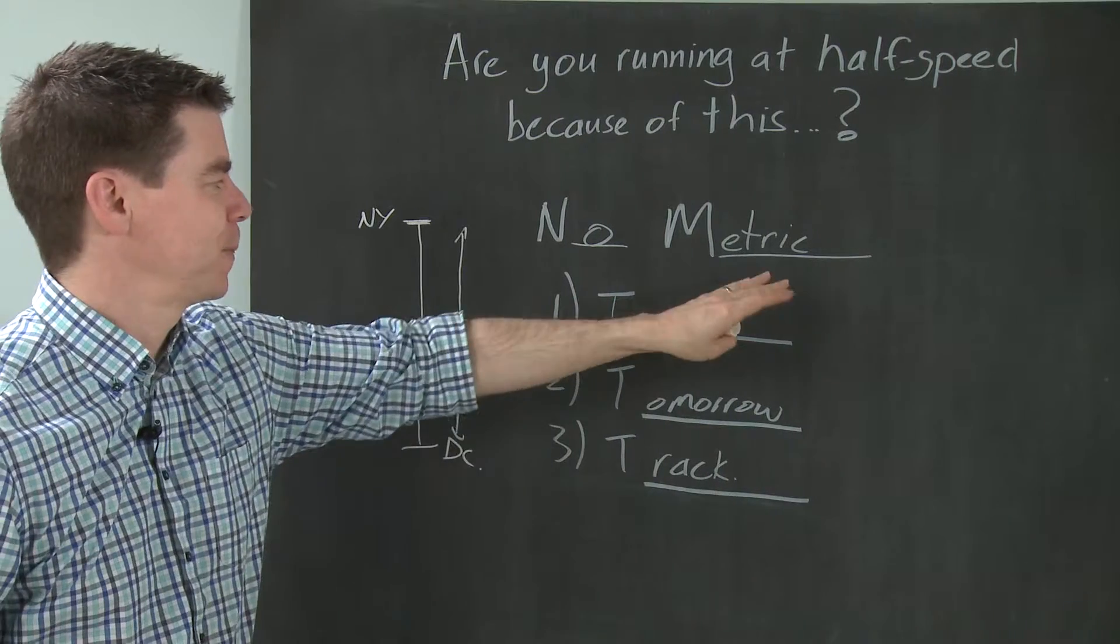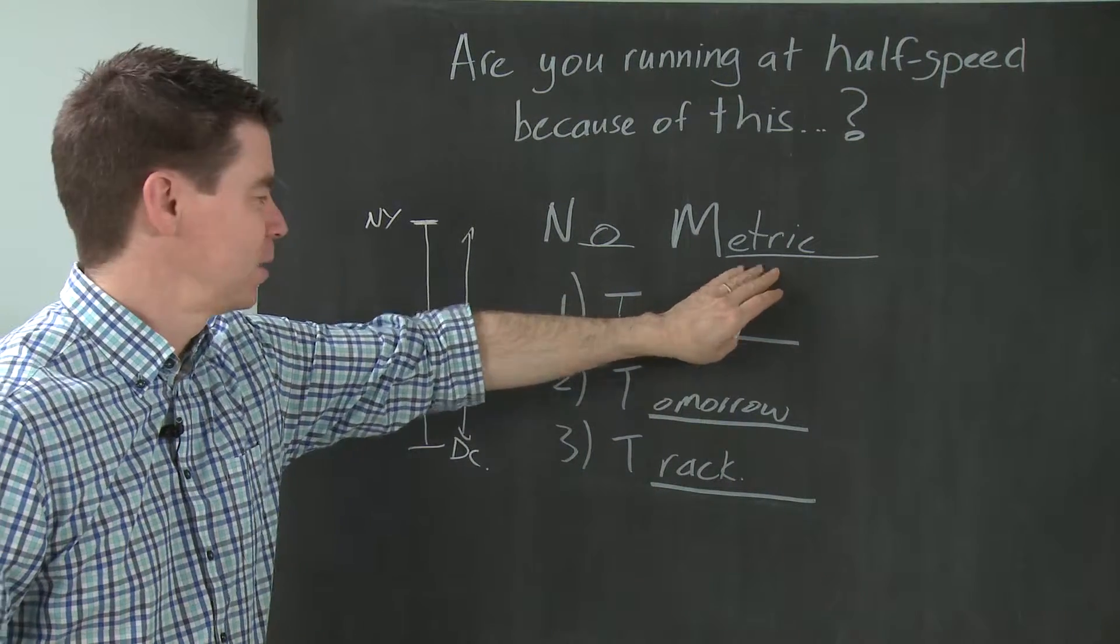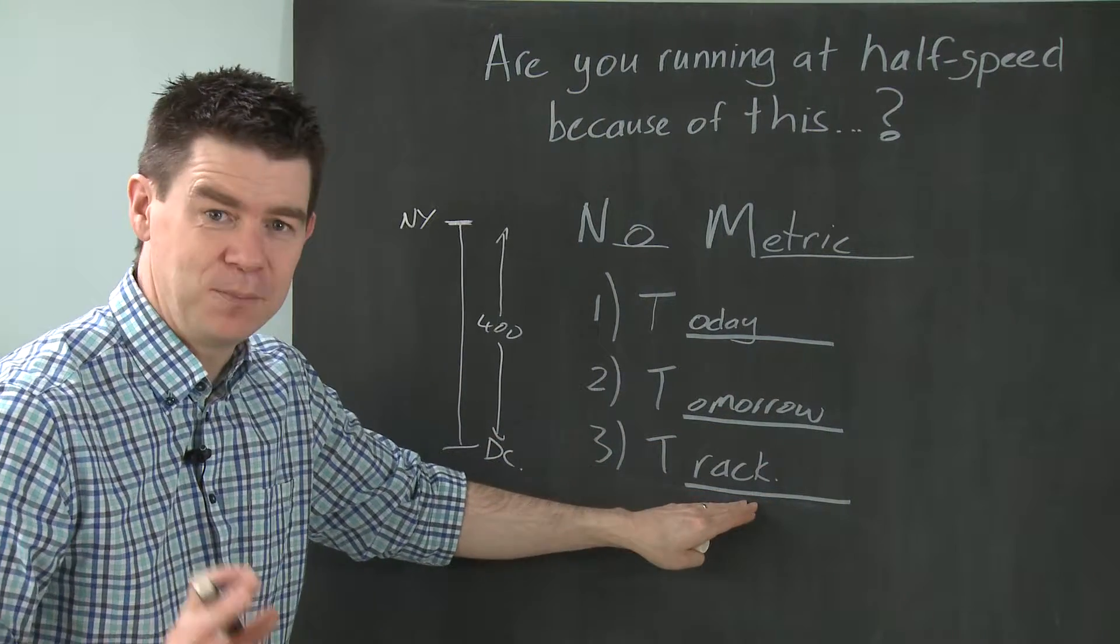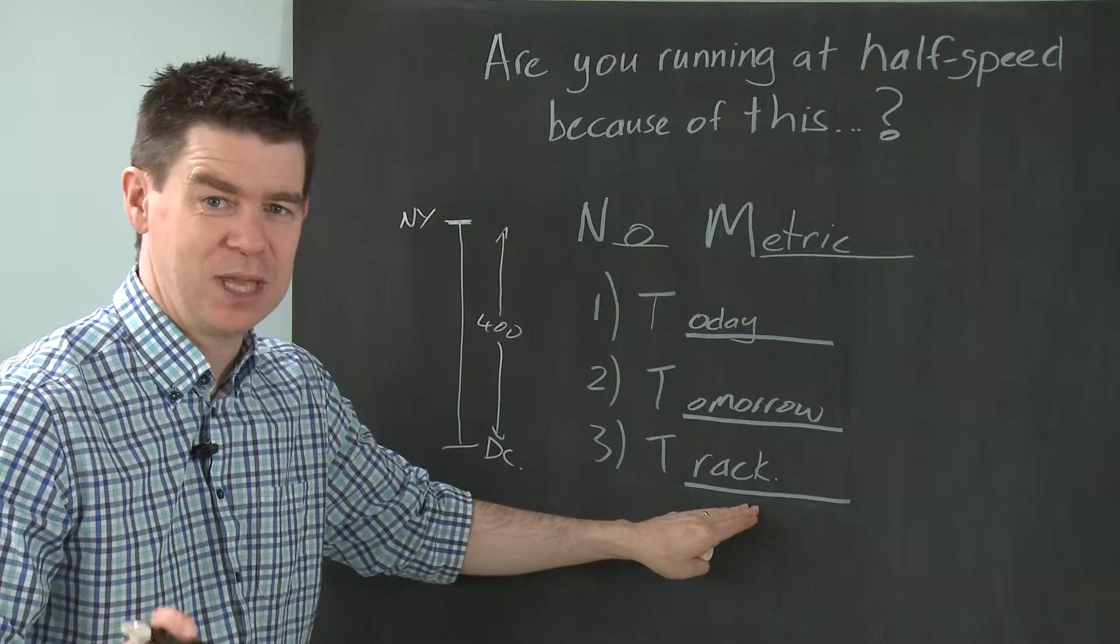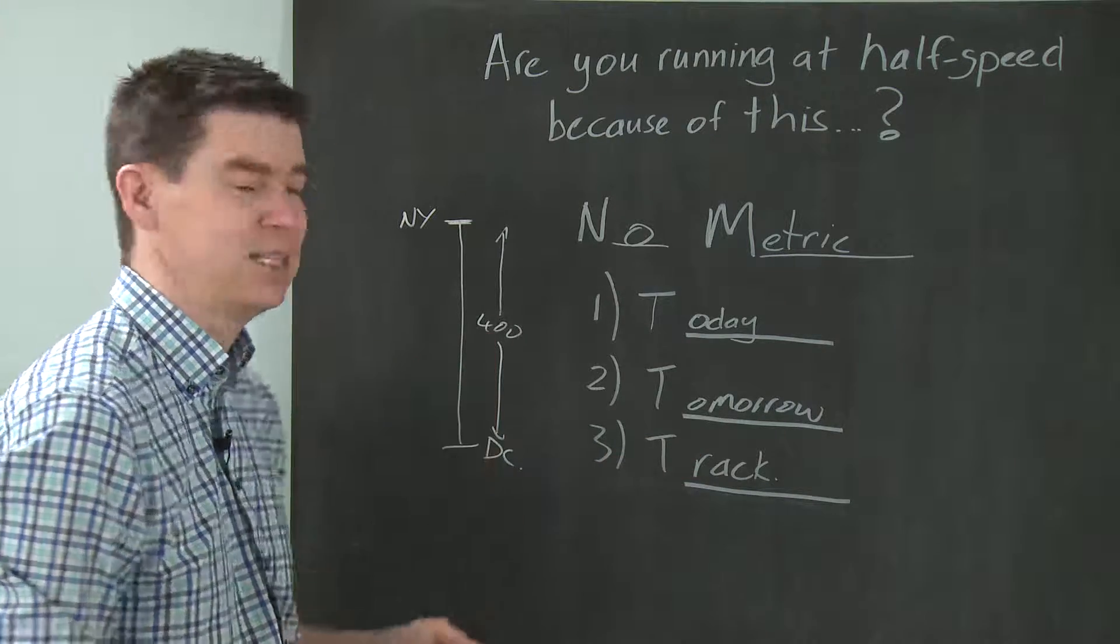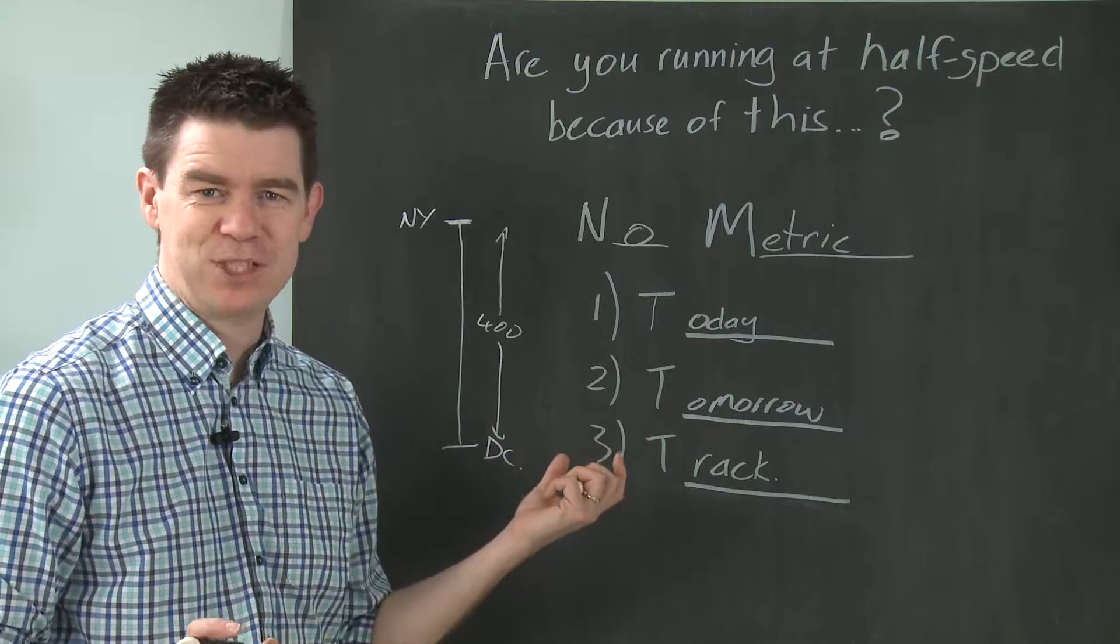So how am I going to use a metric to basically make sure I know where I am today, I know where I'm going to be tomorrow, and I'm going to, most importantly, track how I'm doing against that? So I'm going to suggest to you, the metric we'd use for something like this is the miles, the miles traveled.